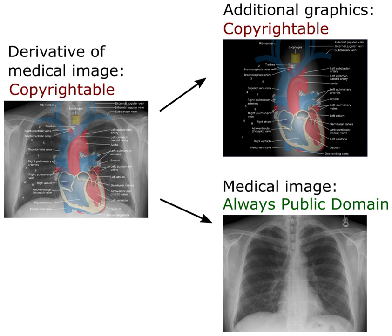The CC licenses all grant the baseline rights, such as the right to distribute the copyrighted work worldwide for non-commercial purposes and without modification. The details of each license depend on the version and comprise a selection out of four conditions. The last two clauses are not free content licenses according to definitions such as DFSG or the Free Software Foundation's standards, and cannot be used in contexts that require these freedoms, such as Wikipedia.